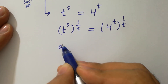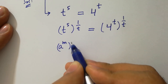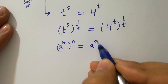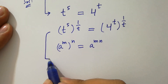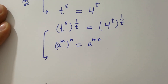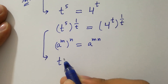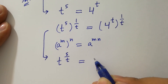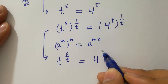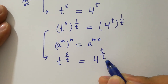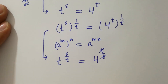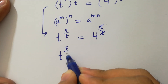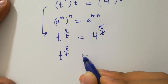Using the rule a to the power m, to the whole power n, equals a to the power mn, it becomes t to the power 5 over t equals 4 to the power t over t, where t cancels. So we have t to the power 5 over t equals 4.